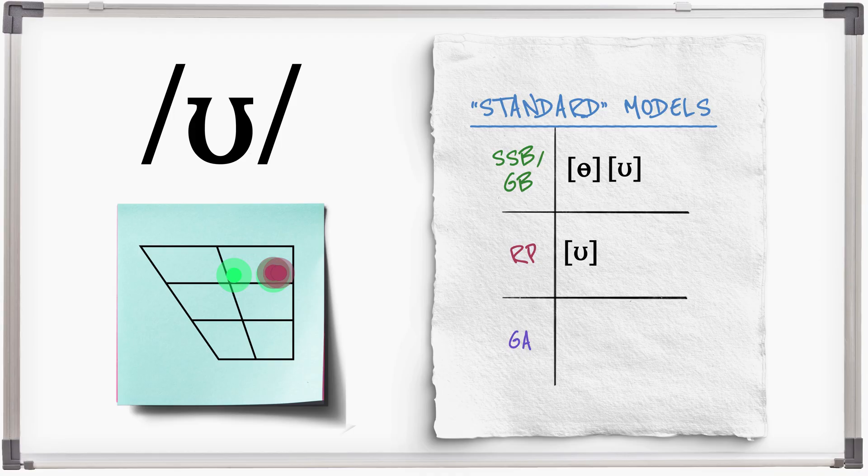Notice that in RP the sound does not change before L. In general American, U is found in all positions, though it can be slightly lower than the British versions. Good look.